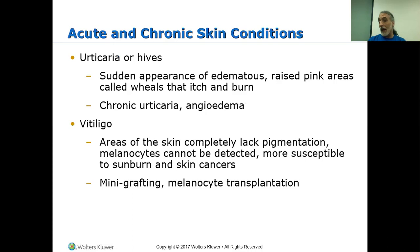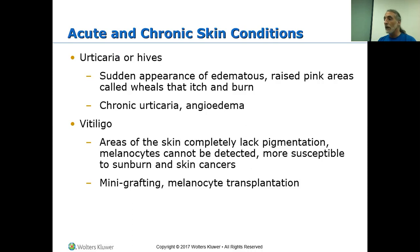Vitiligo — areas of the skin completely lacking pigmentation. The reason we have pigment is to protect us from the ultraviolet rays of the sun. In areas without melanocytes, there is no melanin, no protection — it burns easily, and the cells may be damaged and become cancerous. Treatment can include mini grafts or transplantation of melanocytes from other areas of the body.